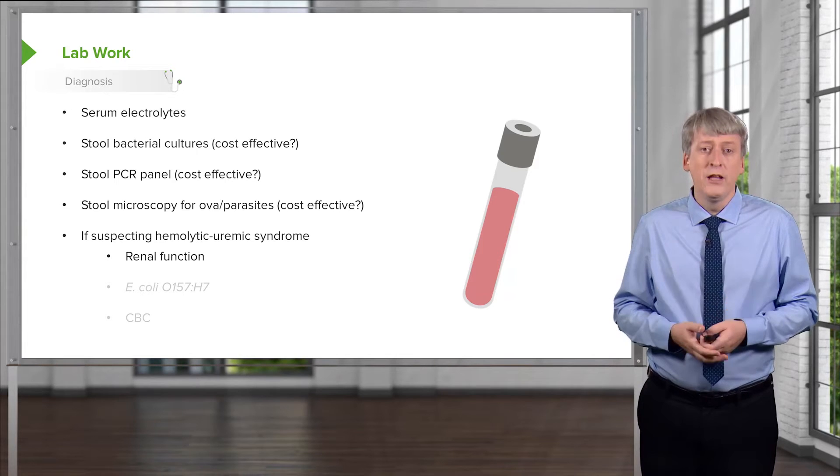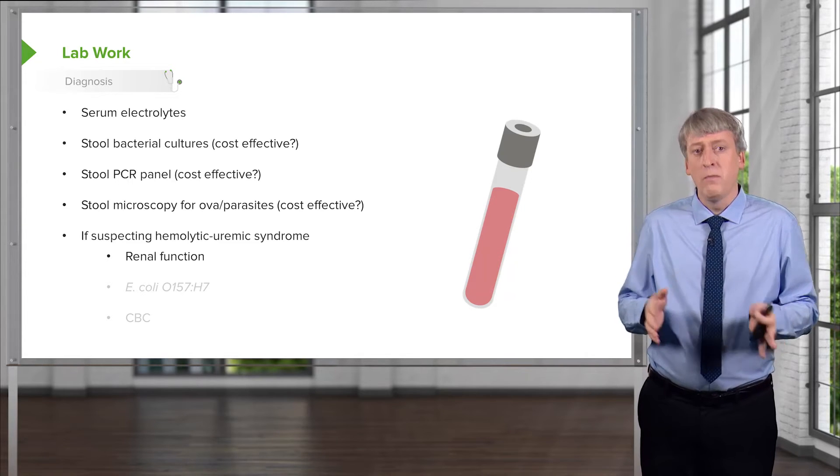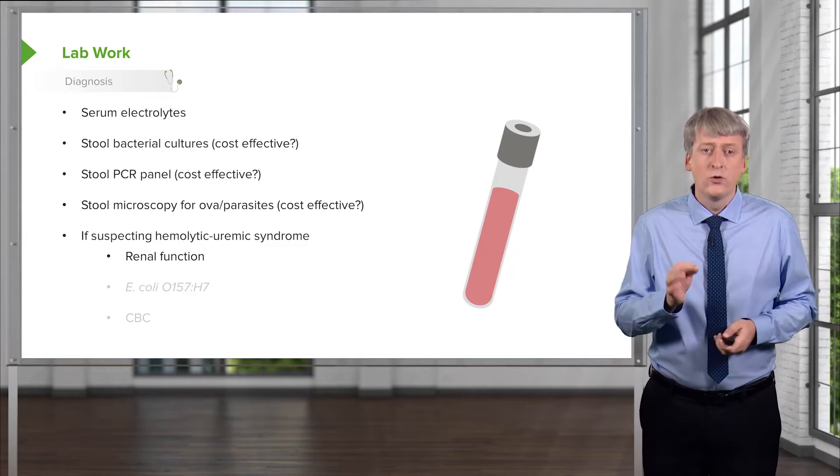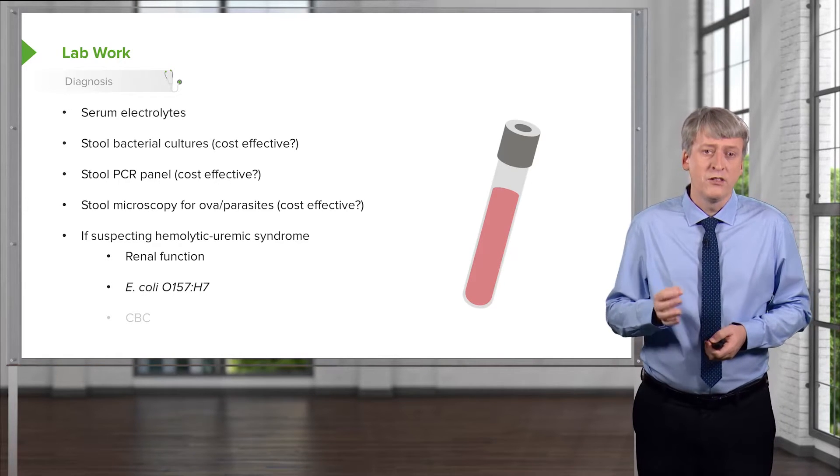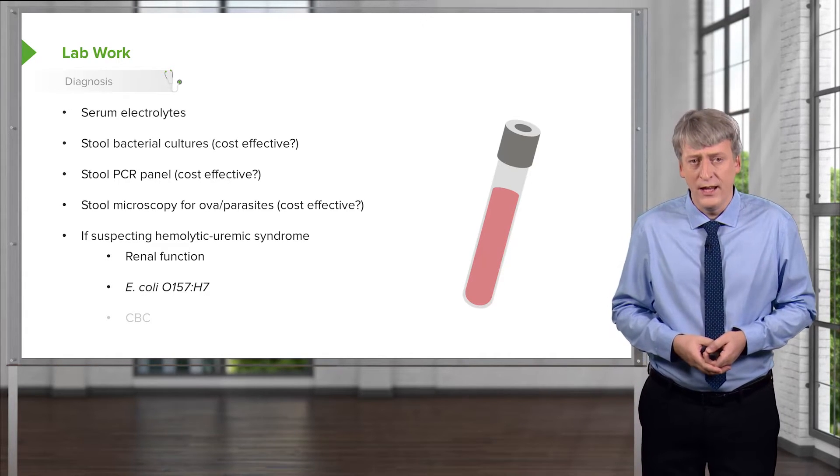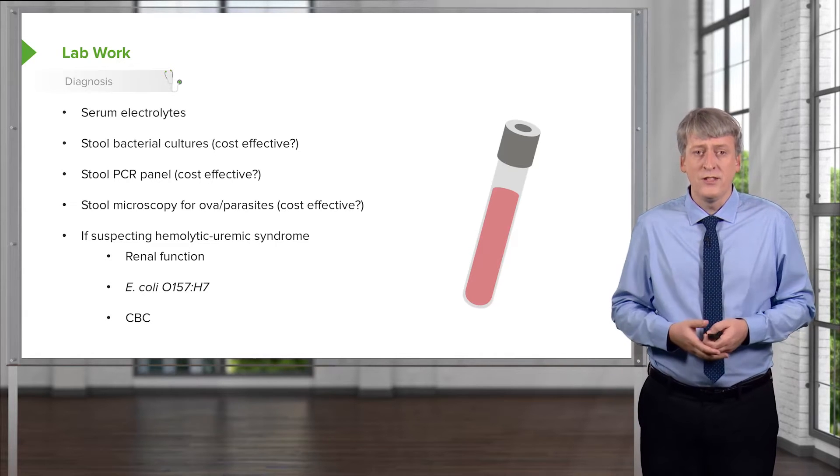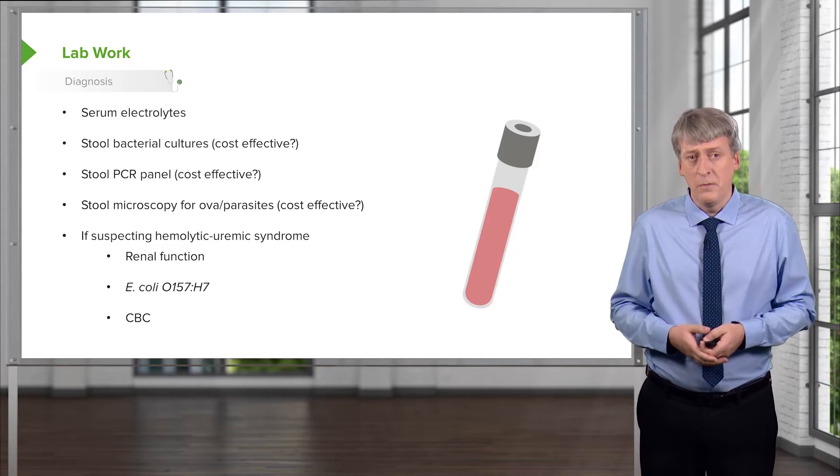If you're suspecting hemolytic uremic syndrome, and we will talk about that more in another lecture, it's critically important to assess renal function, to test for E. coli O157H7, and of course to get a CBC to look for thrombocytopenia and anemia.